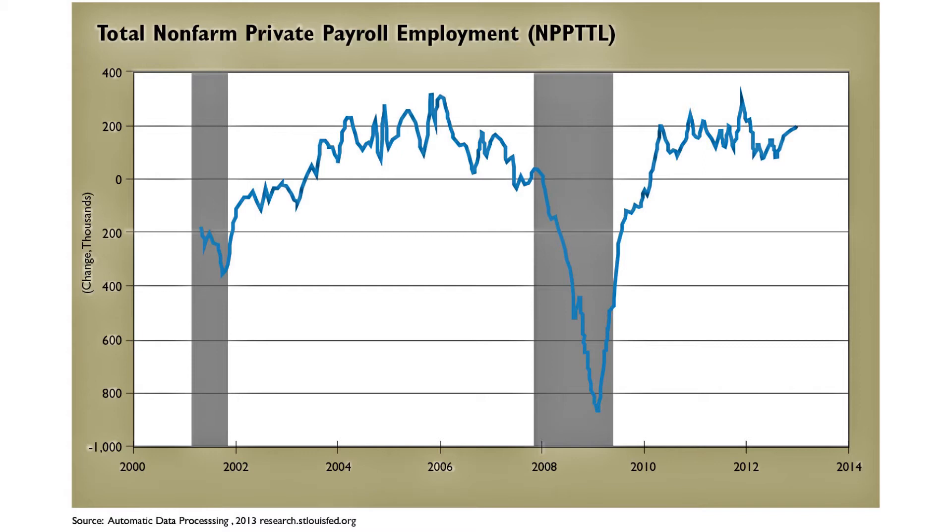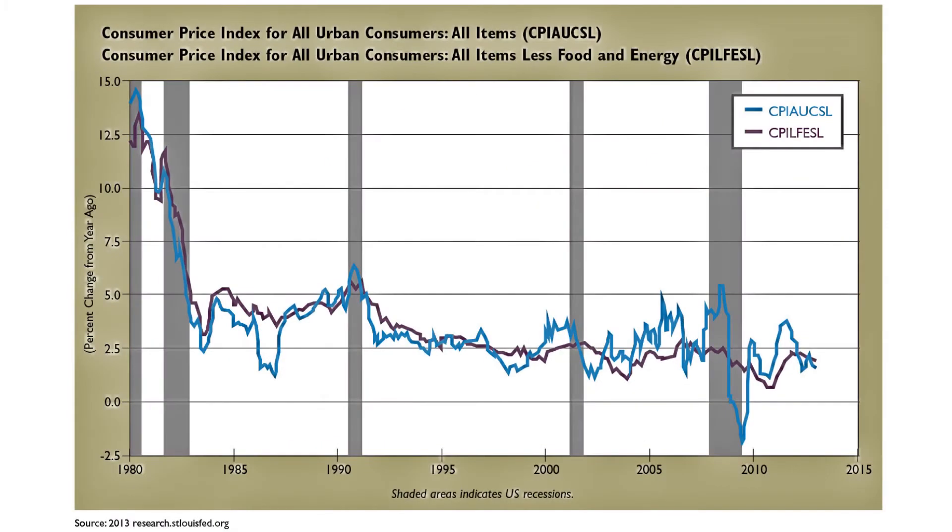We still need that to move up to 250,000 or 300,000 jobs a month to really have some great growth. Then we have inflation - it's been a non-issue. The Fed is watching it very closely. It's been running in the 2-3% range as you can see in this chart for the last ten years.